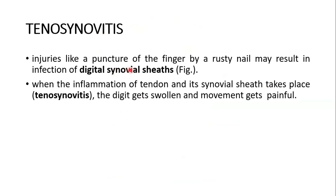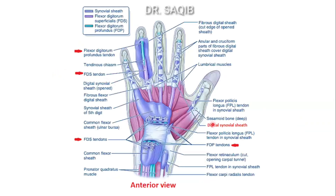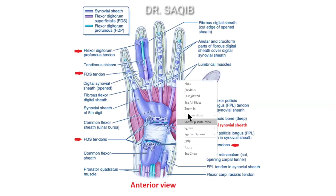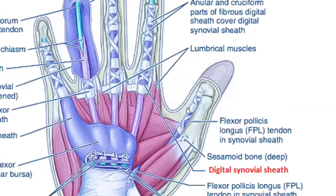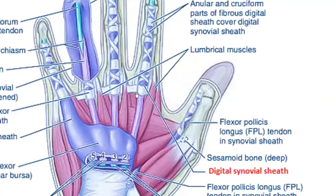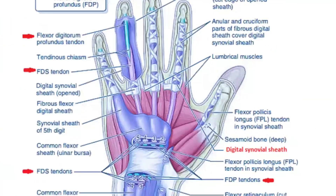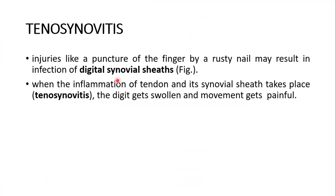Tenosynovitis: injuries like a puncture of the finger by a rusty nail may result in infection of digital synovial sheaths. This is the digital synovial sheath of a tendon. When the inflammation of the tendon and its synovial sheath takes place, this is called tenosynovitis.